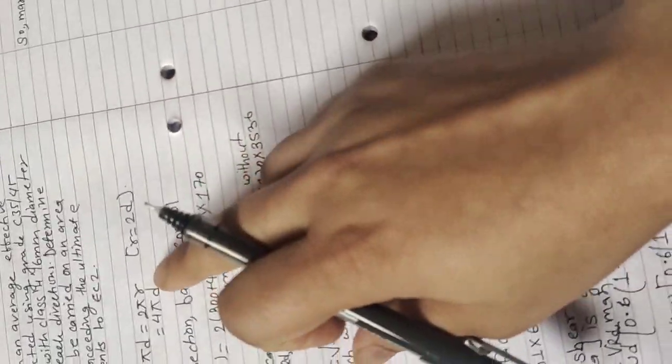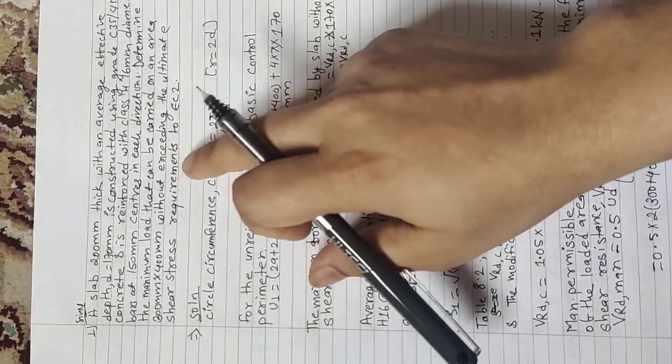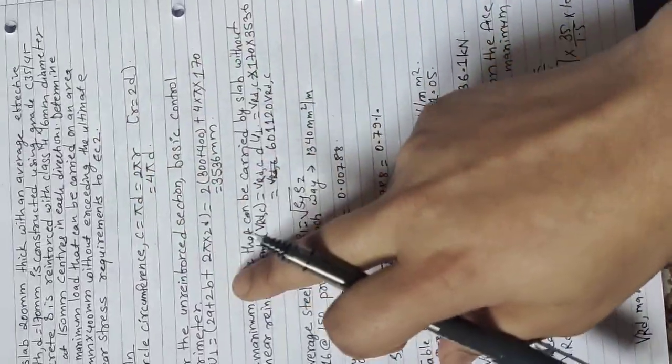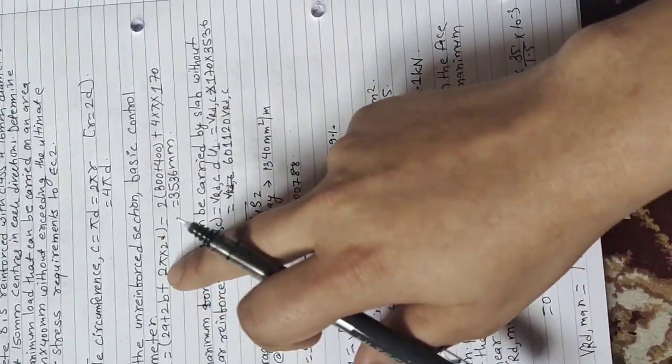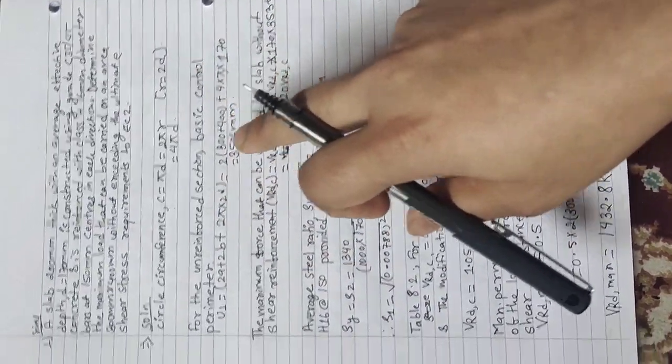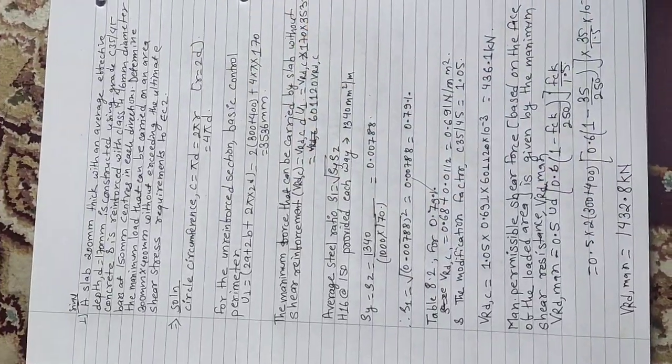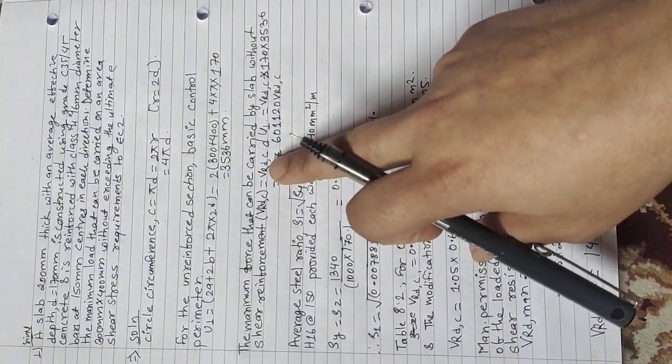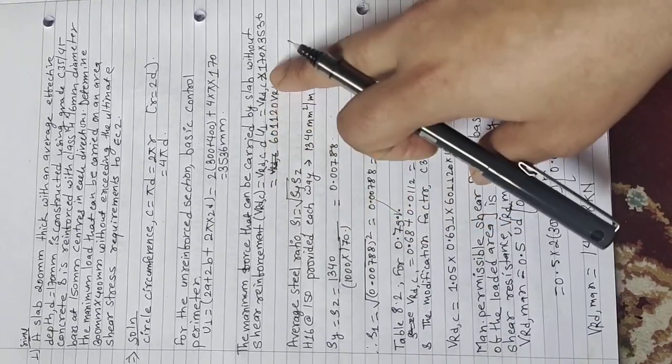This is the circle perimeter. For reinforcement section, basic control perimeter is 2(a+b) plus 2π into 2d. Here we get this value. The maximum force that can be carried by slab without shear reinforcement is P_Rdc·u1. We have d effective depth 170 mm.